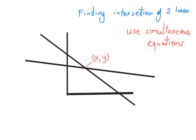Sometimes you may be asked what the point of intersection is between two lines. It's going to be an x and y value that satisfies both equations. So if it satisfies both, we can find the x and y values by doing simultaneous equations of the two lines — get both equations, put them together, and solve simultaneously.